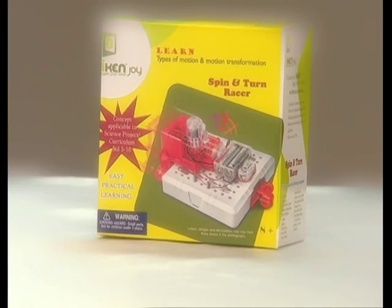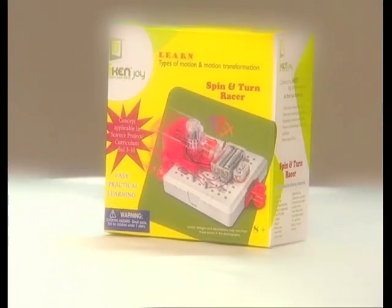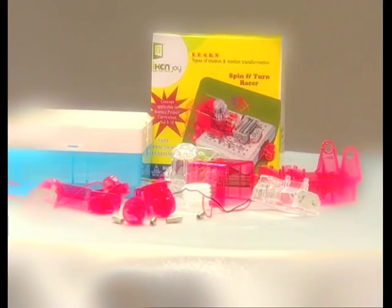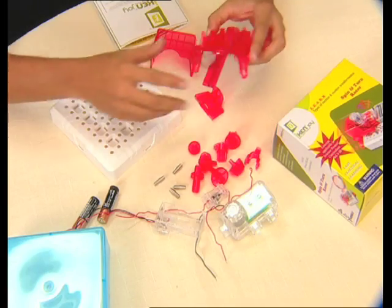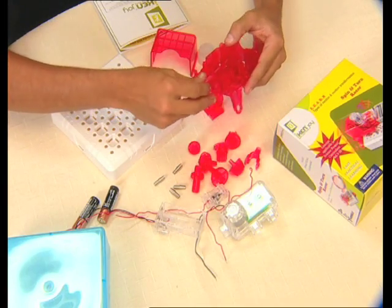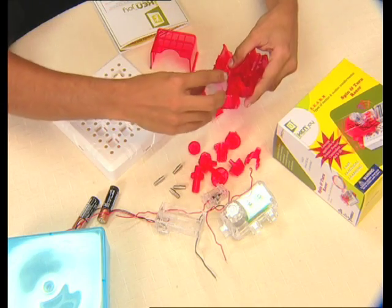Have you ever made an automatic car? Make an automatic motor operated car using the spin and turn assembly kit. Like any other car, we will first make the chassis or, in simple words, the basic body of the car.